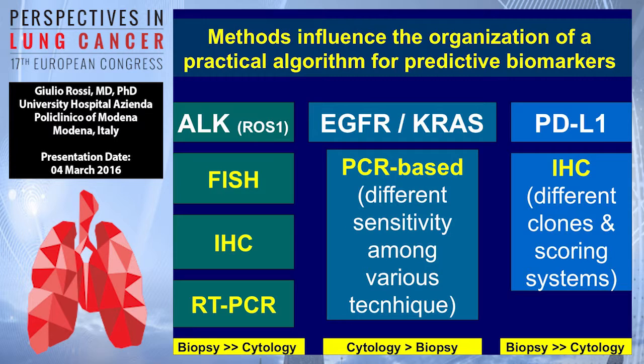Based on the methods, for example, if we use ALK determination, we can use FISH or ROS1 — FISH, immunohistochemistry, and RT-PCR. In this case, biopsy is much more performant than cytology, particularly smear cytology. With smear cytology, the situation with FISH and immunohistochemistry is very difficult.